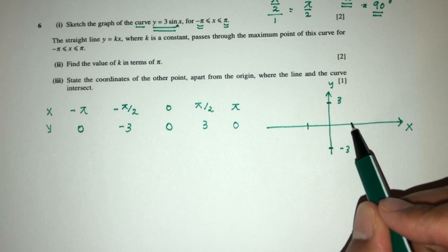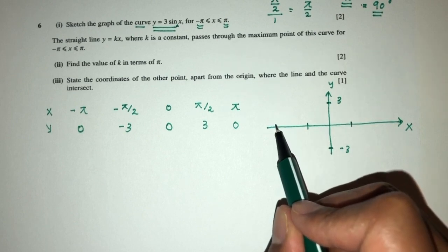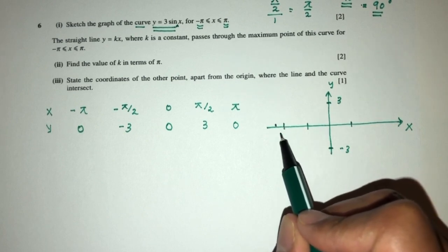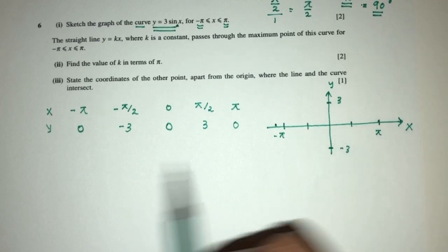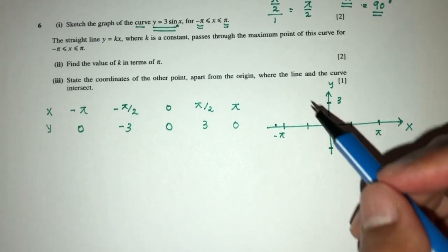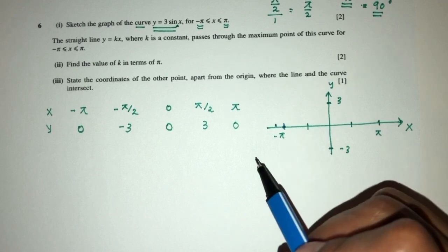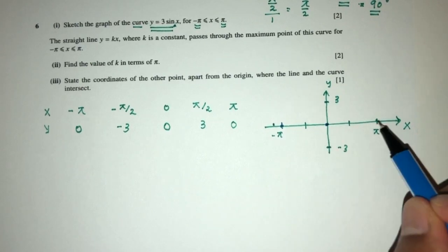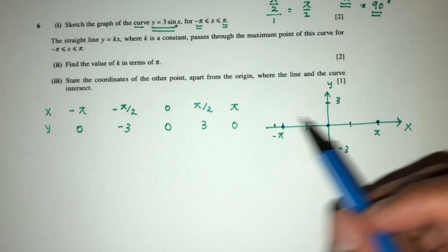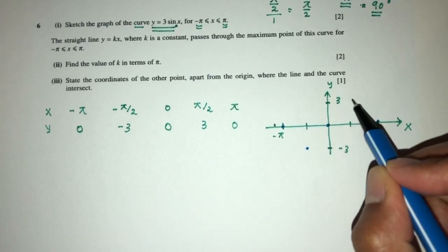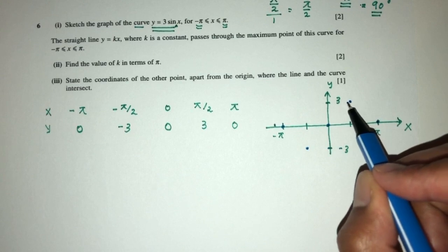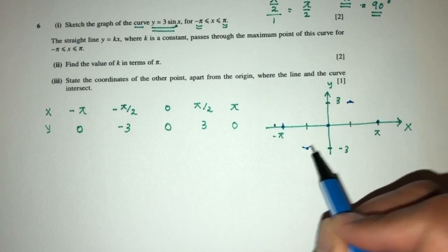Here it is 3. Here we'll have minus 3, for example. And here we have pi by 2, that's over here. That will be minus pi and pi. So let's mark the points. So here, first one is 0, and this will be 0, and this will be 0. And we know this will be minus 3. So minus 3 is right here. And this will be 3.